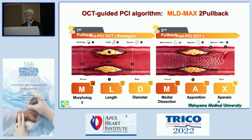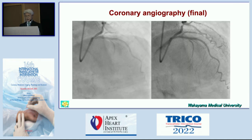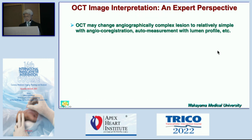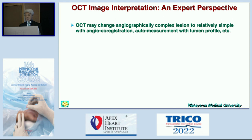After putting a stent, we have to think about malapposition and medial dissection, especially in the distal part, and also apposition and expansion — which is the most important cause of restenosis. We put the stent and the final result is very good. OCT may change an angiographically complex region to a relatively simple one. A complex treatment might cause complications, so the simpler approach is best. Angio-coregistration and auto-measurement with lumen profile are very useful tools.